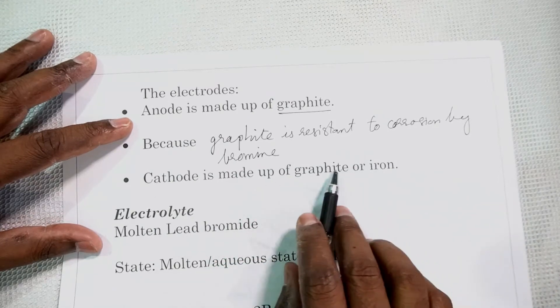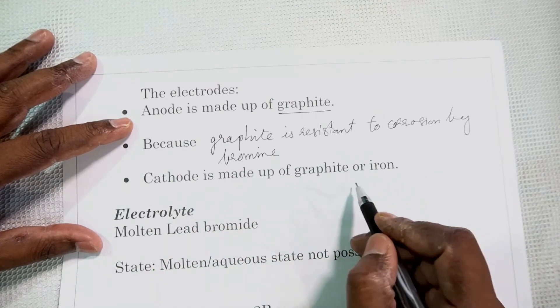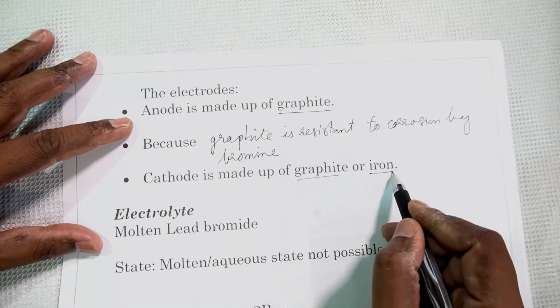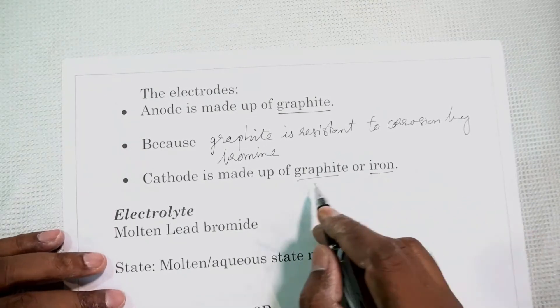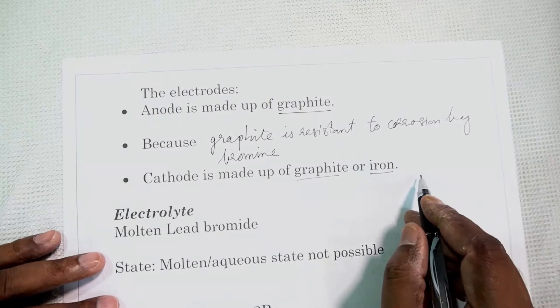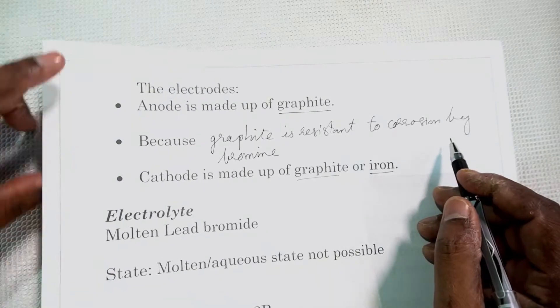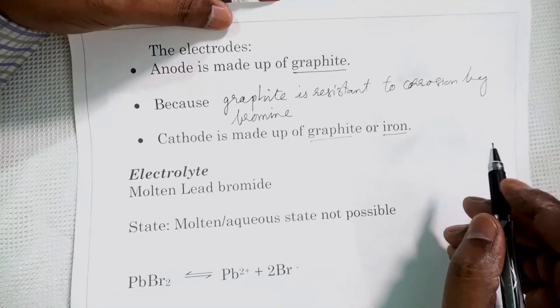You will understand as you go down. Now we will see that the cathode is made up of graphite or iron. Here we have a choice. You may use iron or graphite. Any passive electrode can be used there. So we understood why we use graphite for the anode.